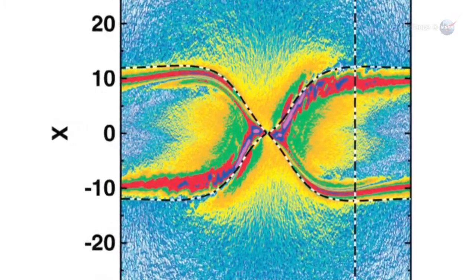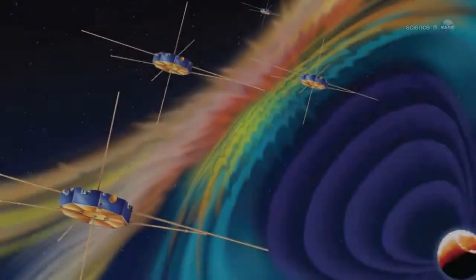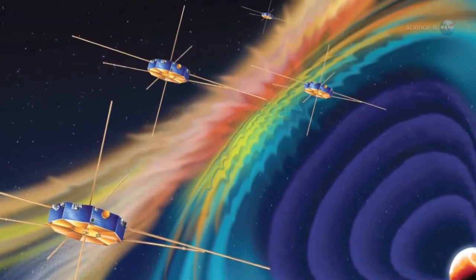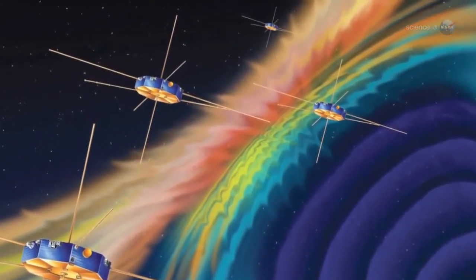A single spacecraft, properly instrumented, can make these measurements. This means that a single member of the MMS constellation, using the diagnostics, can find a portal and alert other members of the constellation.